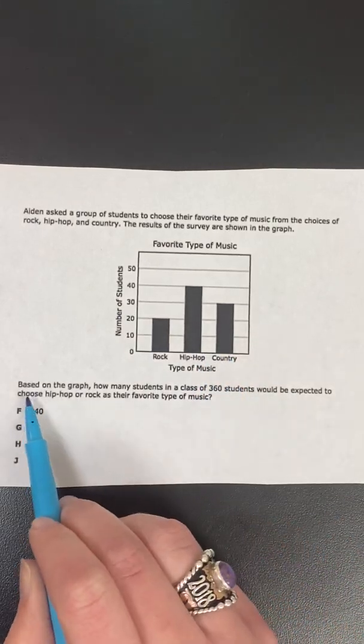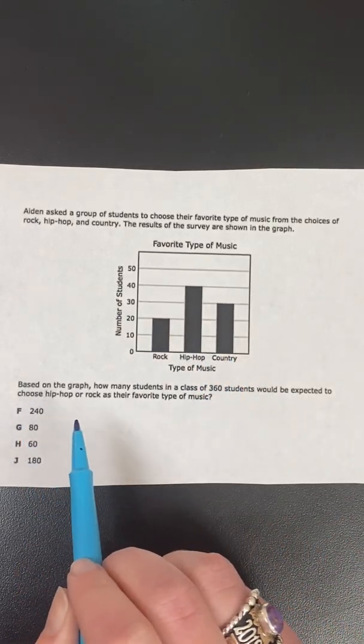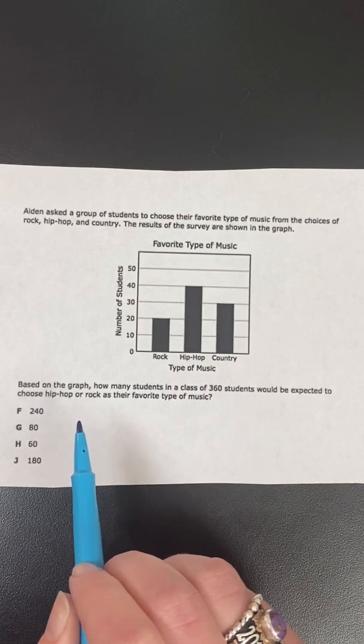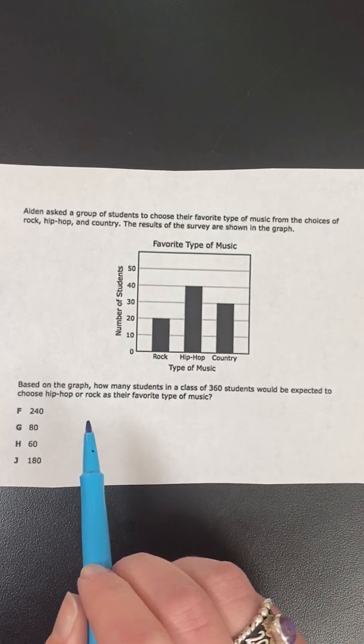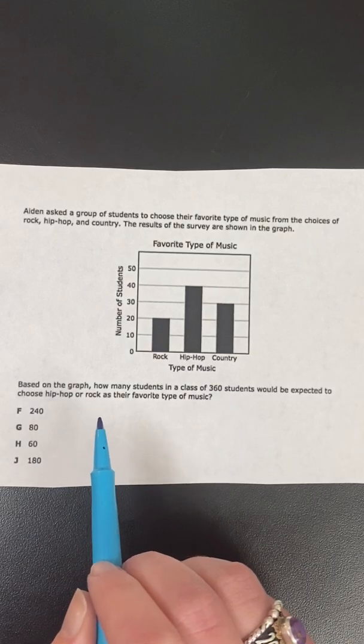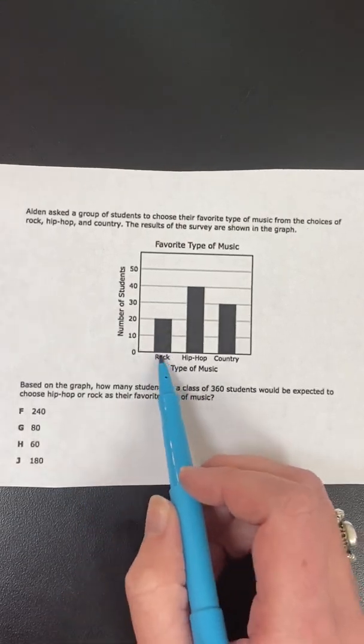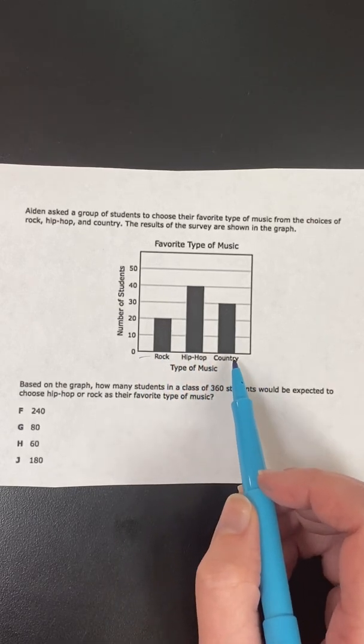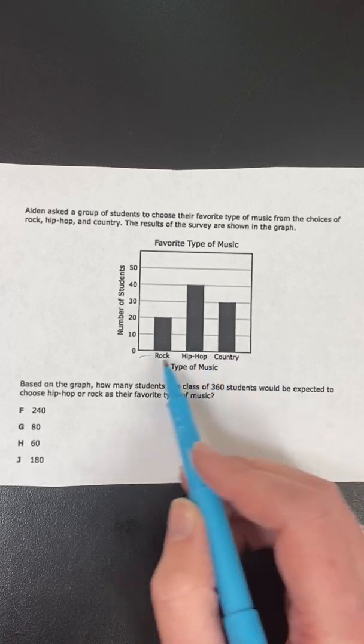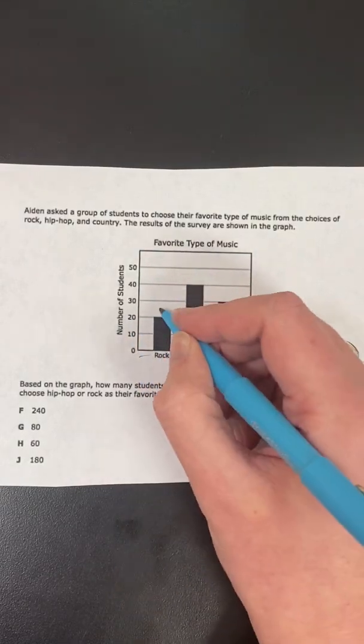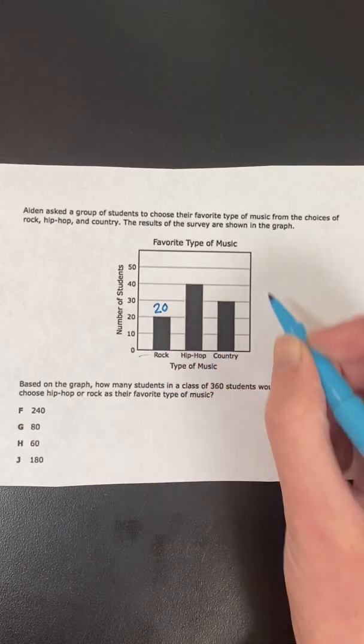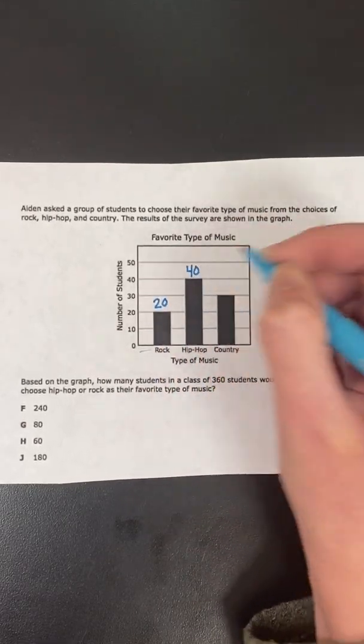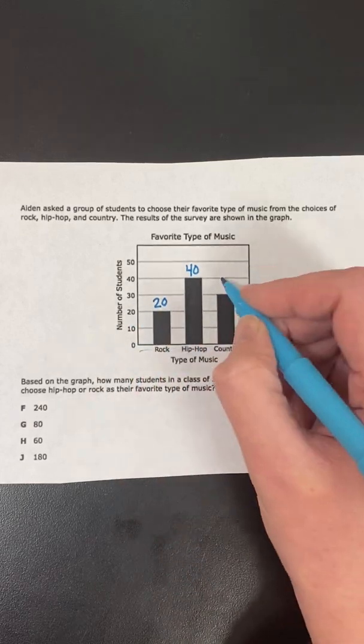The results of the survey are shown in the graph, so we have rock, hip-hop, and country. And then the actual question is saying, based on the graph, how many students in a class of 360 would be expected to choose hip-hop or rock as their favorite type of music? So first thing, when we have a bar graph like this, the first thing we always need to do is we need to label our bars. So for rock, I'm going to go up, and that is 20. So I have 20 people who like rock. I have 40 people who like hip-hop. And then country would be 30.